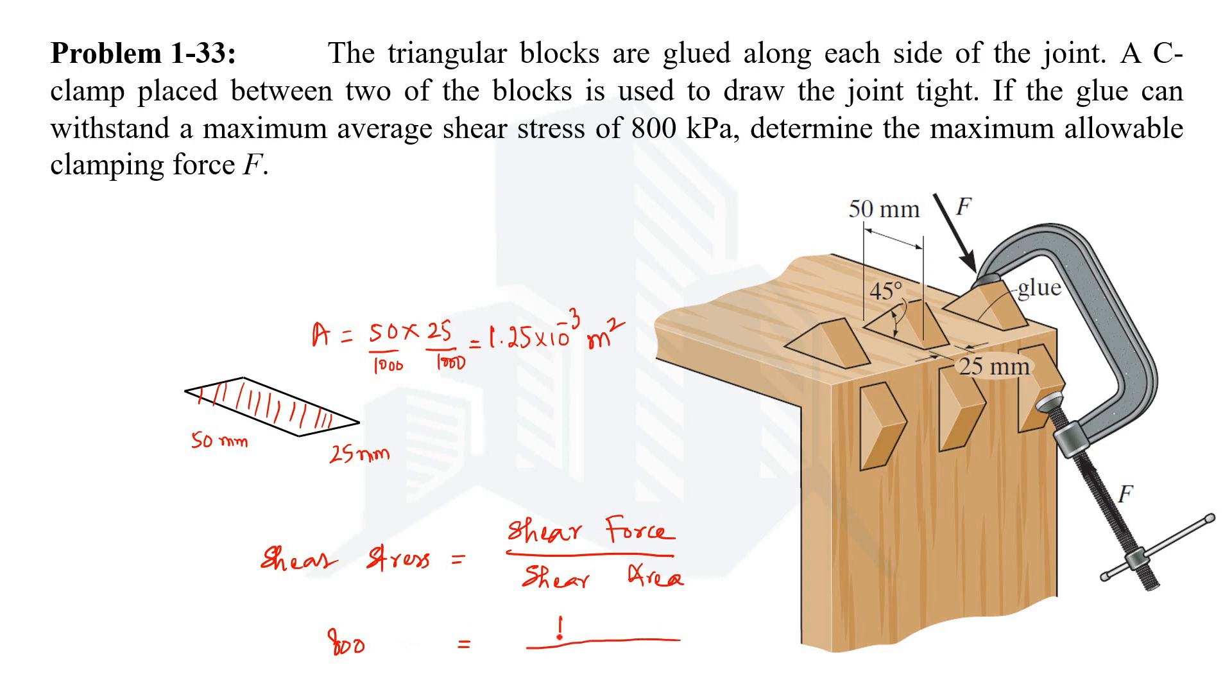Shear force we just had as F cos 45 and shear area is 1.25 into 10 raised to power minus 3. So in this equation we can see that only F is the variable, everything else is given. So we can have then the value of force as 1.41 kN.